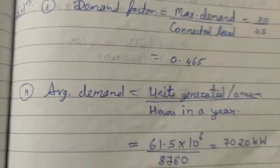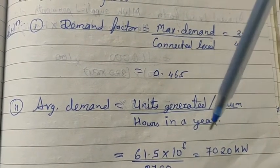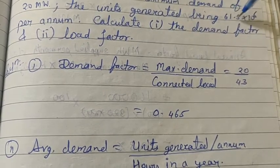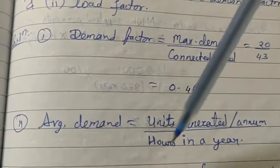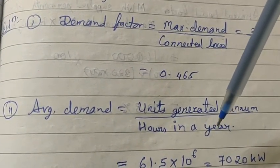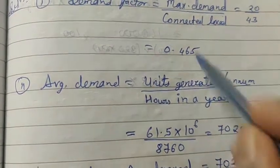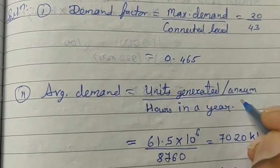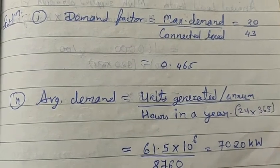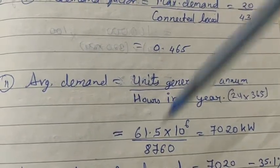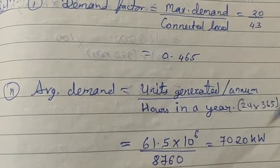Now for load factor, we first need to find the average demand. Average demand equals units generated per annum divided by hours in a year. Units generated per annum is 61.5 × 10⁶. Hours in a year is 24 × 365 = 8760 hours. Solving this, the average demand comes out to be 7020 kilowatt.